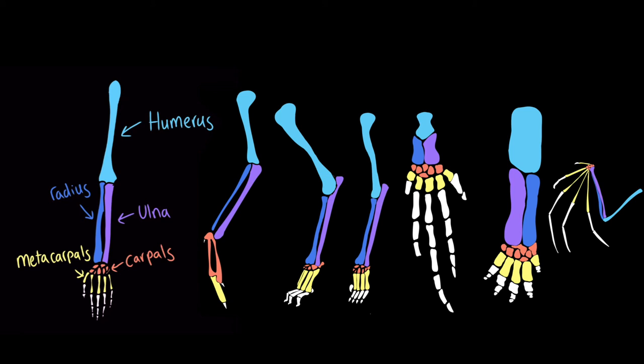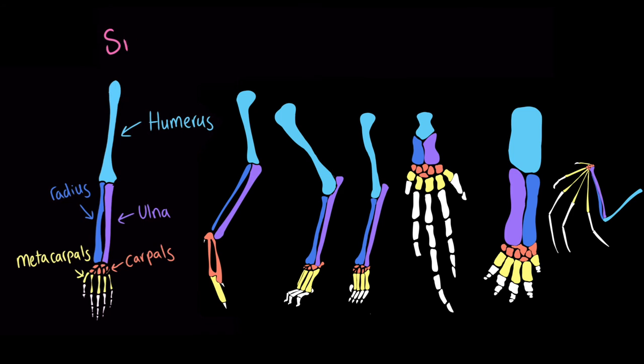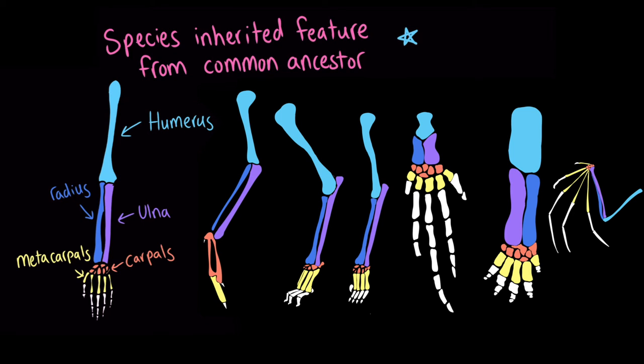These animals can use these features in different ways, to fly, to run, to swim, or to wave hello. But despite these differences in function, the similarities of the bone structure indicate that these species inherited these features from a common ancestor. This means that the bone structure is a homologous feature.